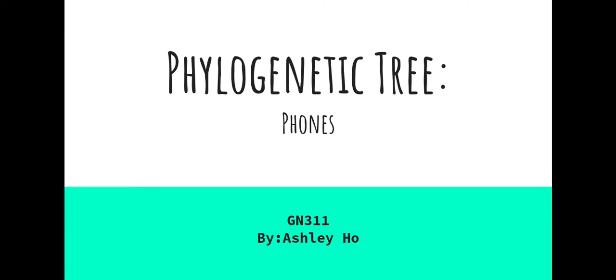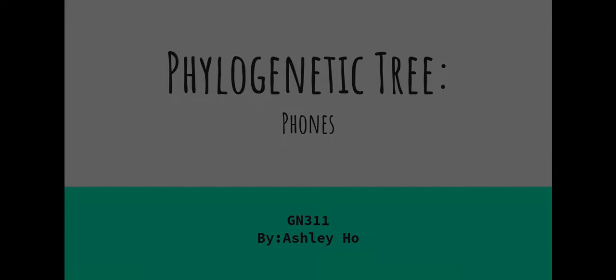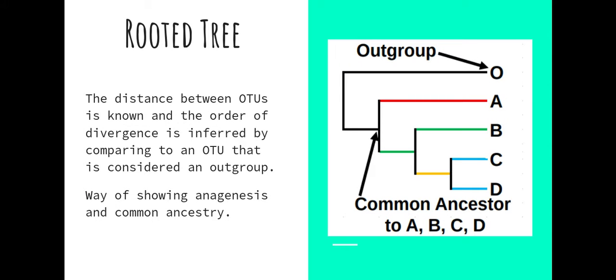Phylogenetic trees are visual representations of lineage between operational taxonomic units, or OTUs. I'll be forming a rooted tree as rooted trees are able to show the distance between each OTU. It is a way of showing anagenesis and common ancestry.